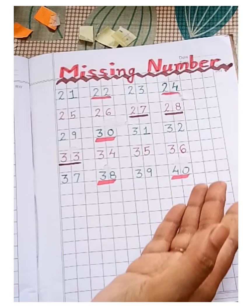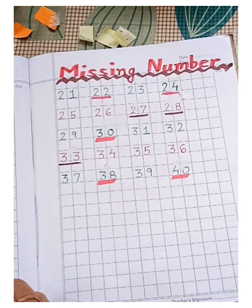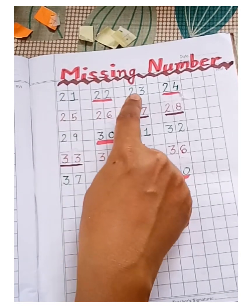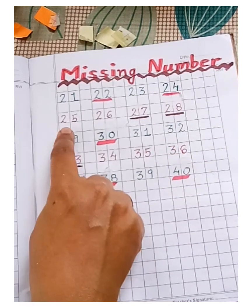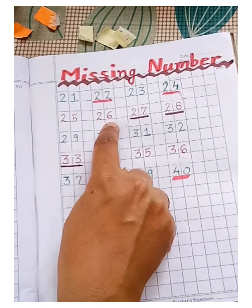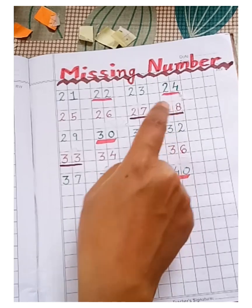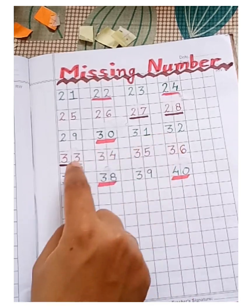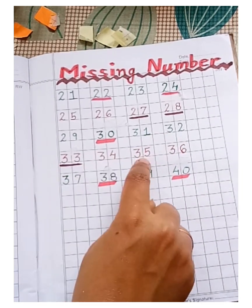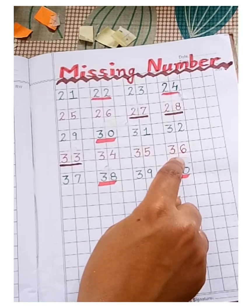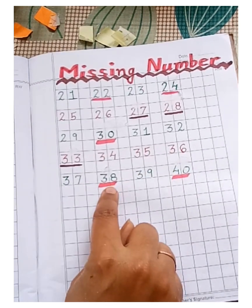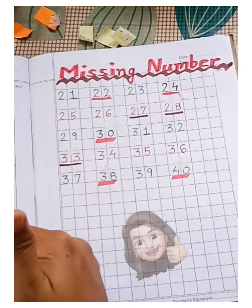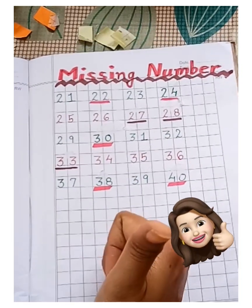Now, let's read the numbers again. Children, read with me. 21, 22, 23, 24, 25, 26, 27, 28, 29, 30, 31, 32, 33, 34, 35, 36, 37, 38, 39, and 40. Great. We have found out all the missing numbers.